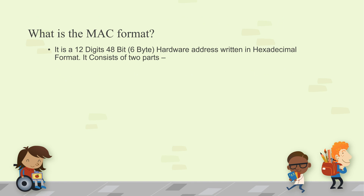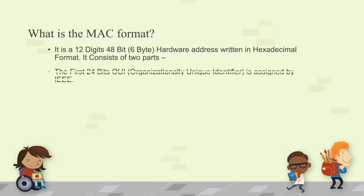What is a MAC address format? It is a 12-digit, 48-bit, 6-byte hardware address written in hexadecimal format. It consists of two parts: the first 24 bits is the OUI (Organizationally Unique Identifier), assigned by IEEE, and the last 24 bits is the manufacturer-assigned code.